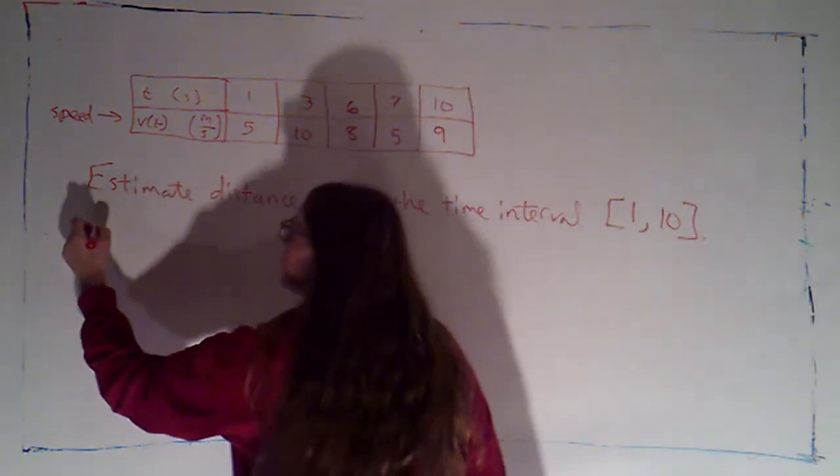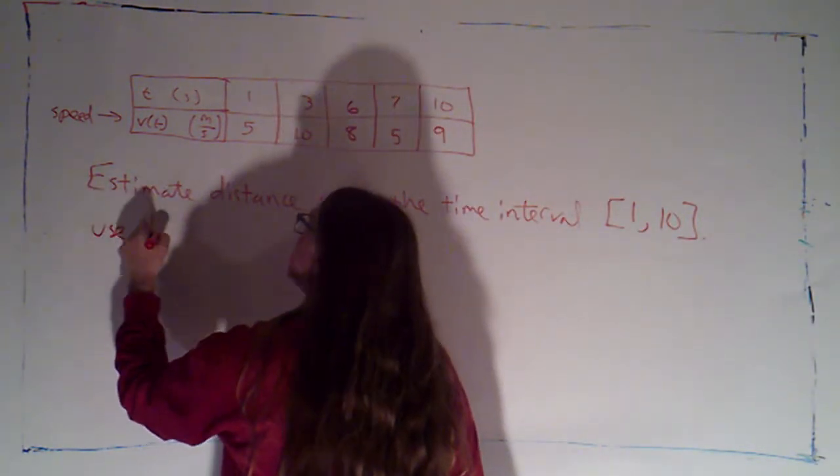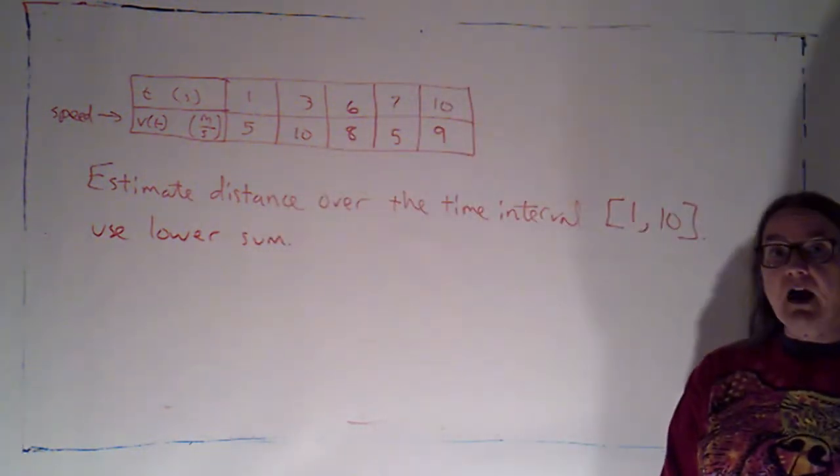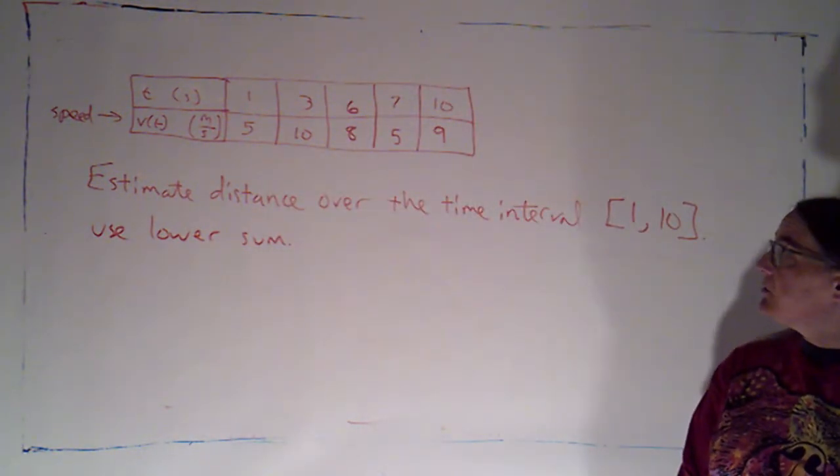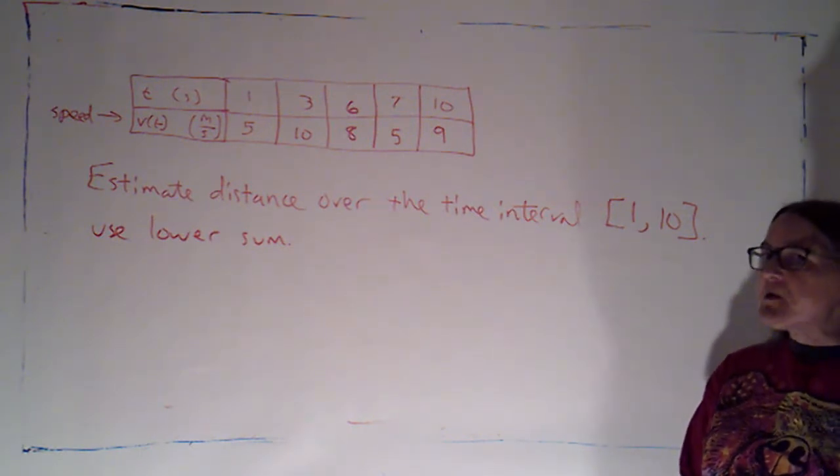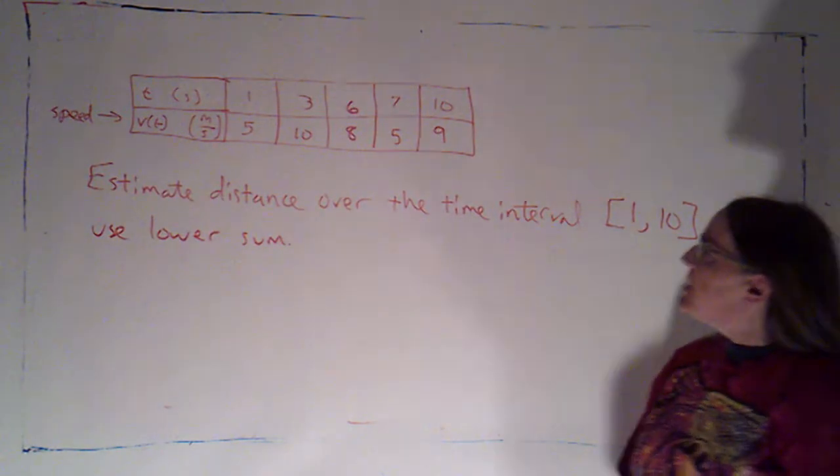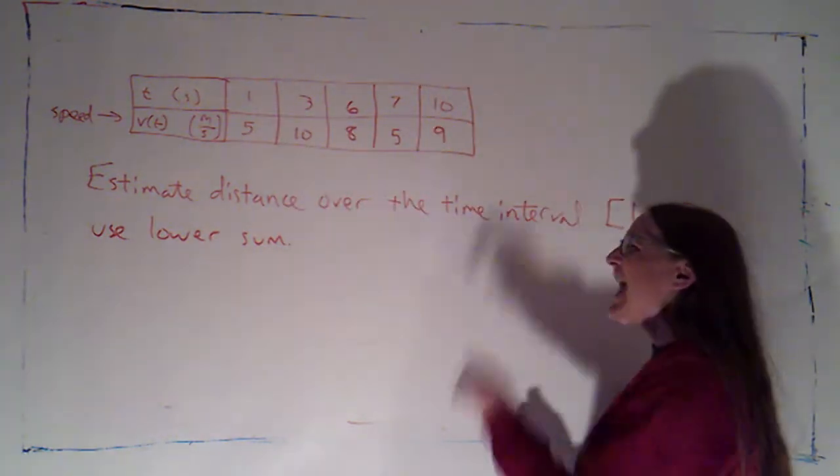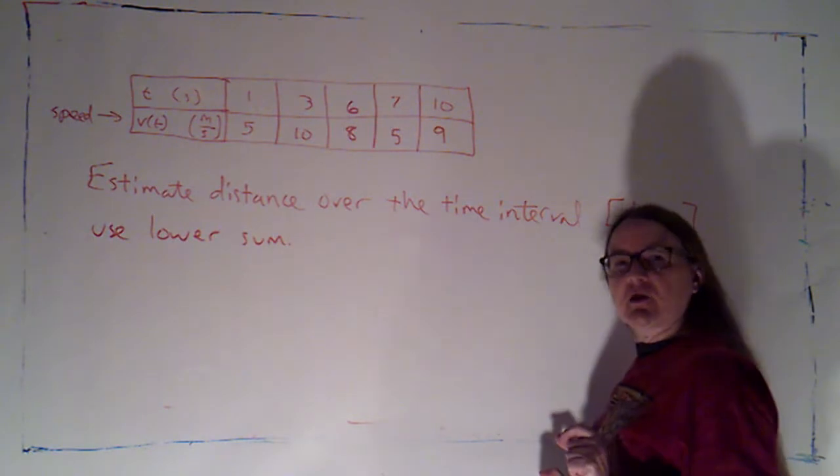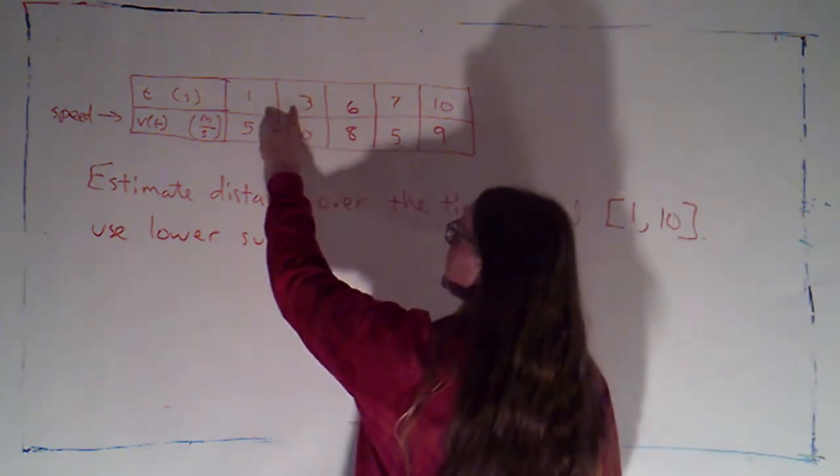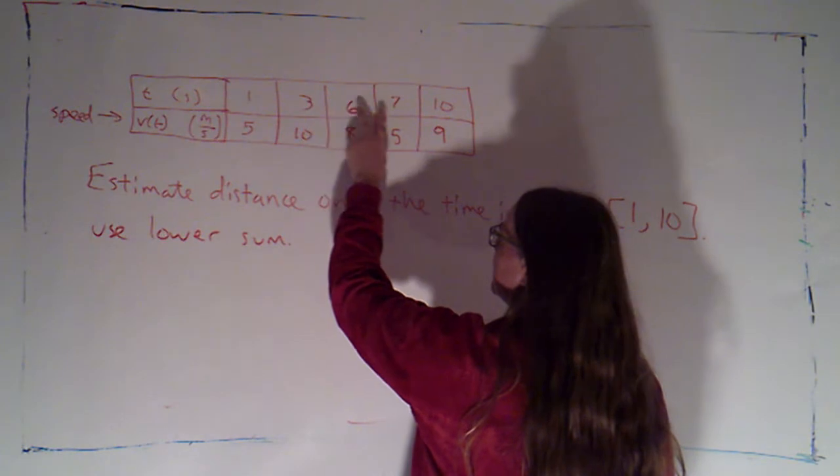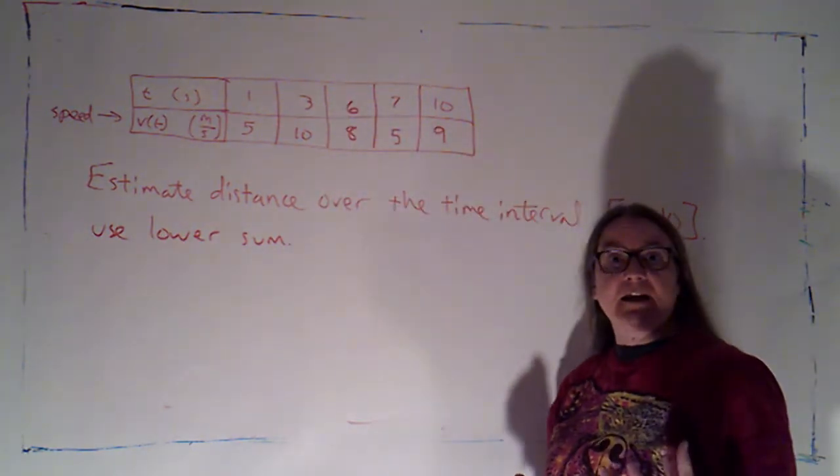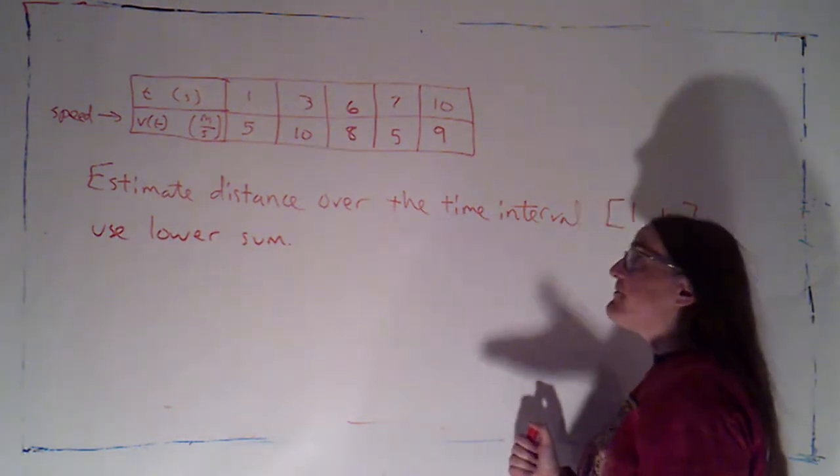All right, now I'm going to add to the directions. Let's use a lower sum this time. So over each subinterval, I'm going to pick the smallest value. Now here, I can't really use a regular partition, because if I take a look at when I took the measurements of what the speed were, I didn't take it at regular time intervals. These times are 2 seconds apart, 3, 1, 3.